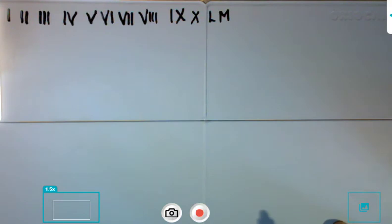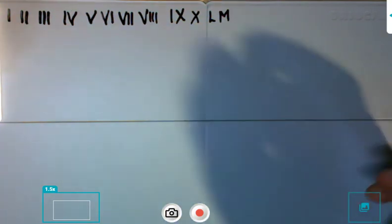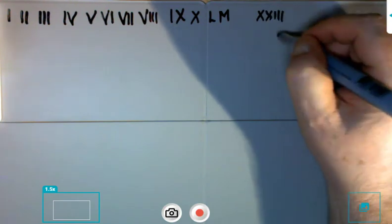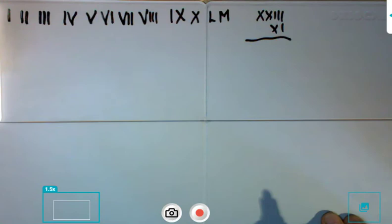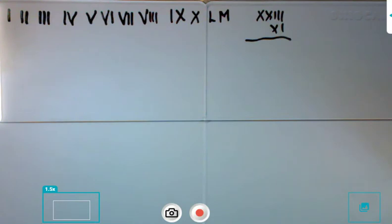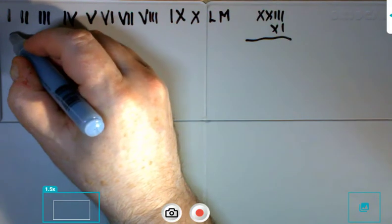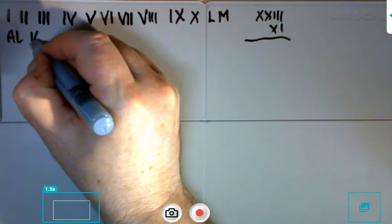These numbers are beautiful but they are absolutely useless if you would like to make calculations. For example, can you calculate 23 multiplied by 11? You cannot do this. So in some century the necessity to make calculations forced people to design a new numeric system. This numeric system was based on Indian and Arabic ideas, and the first great mathematician who used it was a Malaysian one named Al-Khwarizmi.